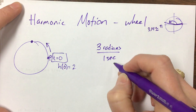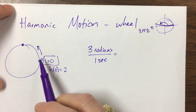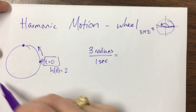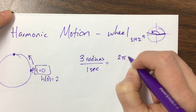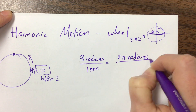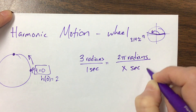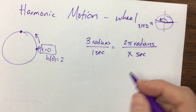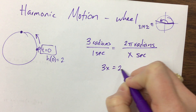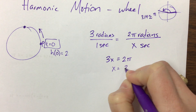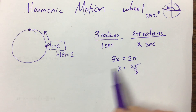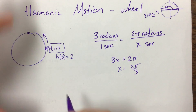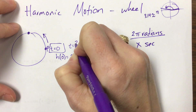Back to the problem. If it's doing 3 radians in 1 second, we need to figure out how long it takes to do one full rotation — how long does it take to do 2π radians? Setting up a proportion: 3 radians is to 1 second as 2π radians is to x seconds. So 3x = 2π, and x = 2π/3. That means it does one full rotation and comes back around at time 2π/3.